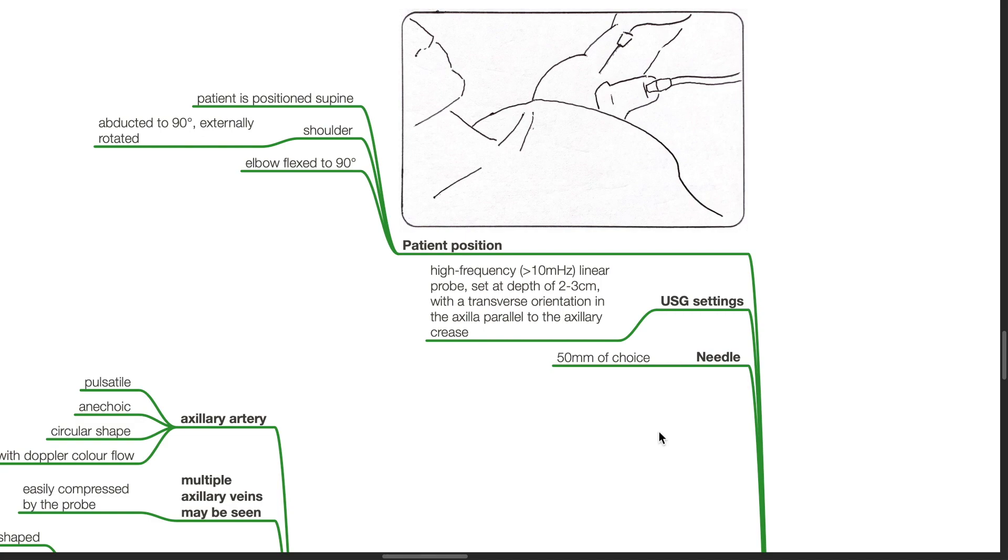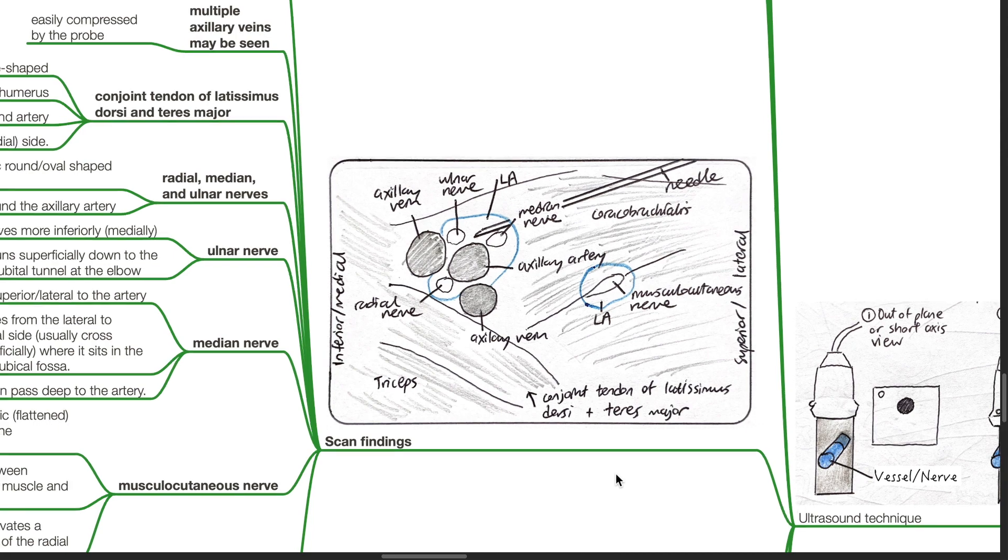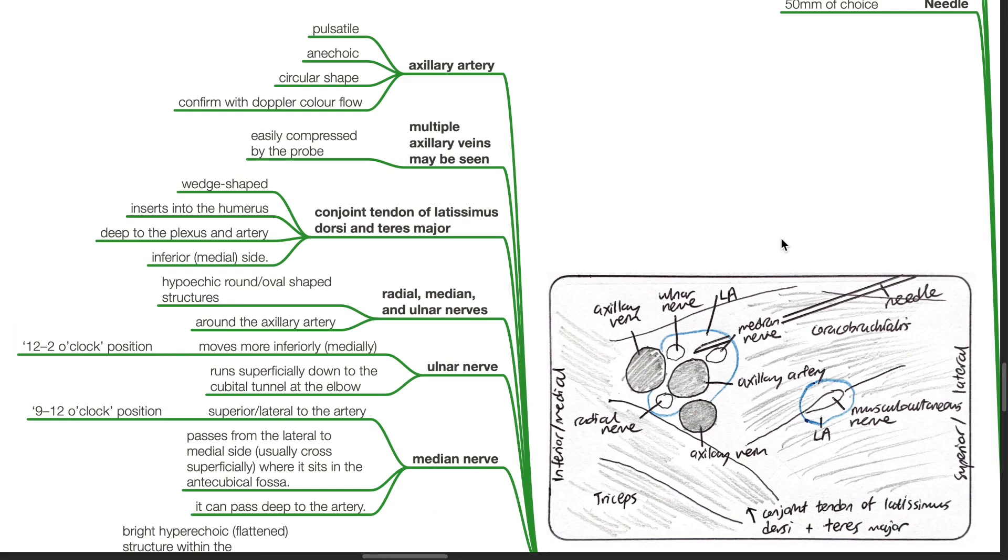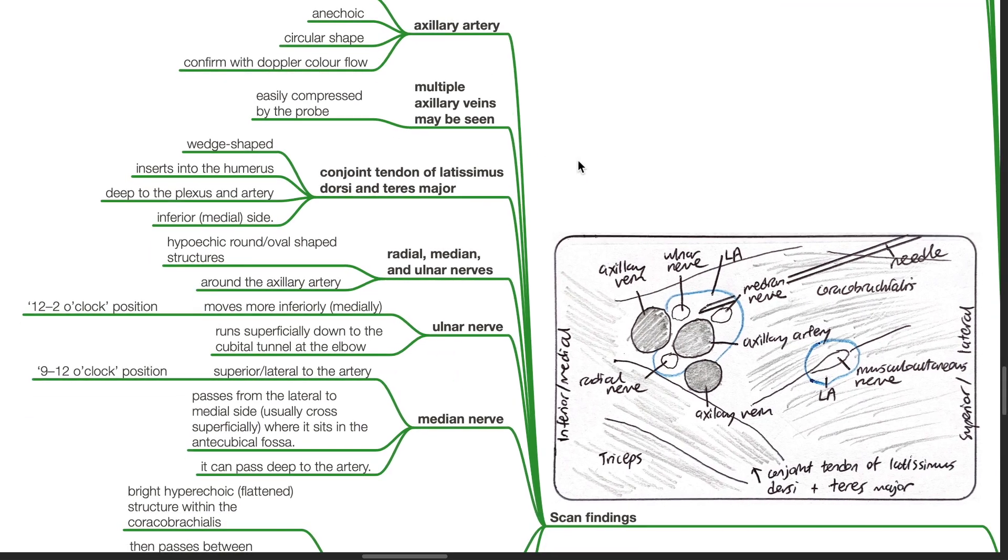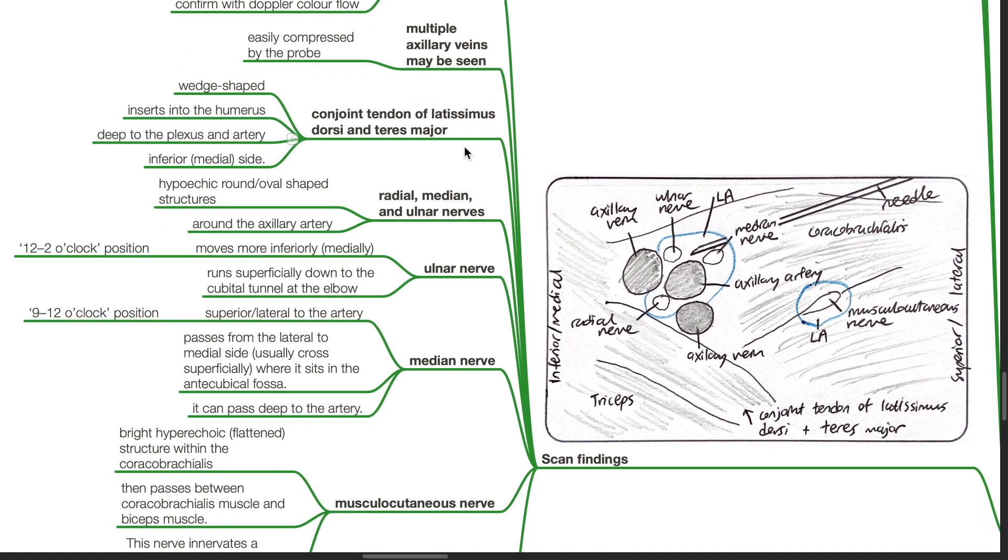Scan findings. The axillary artery is seen as a pulsatile, anechoic, circular structure and confirm its presence with Doppler color flow. Multiple axillary veins may be seen. These are easily compressed by the probe. The conjoined tendon of the latissimus dorsi and the teres major: it is a wedge-shaped structure and inserts into the humerus. It is deep to the plexus and the artery at the inferior medial side.